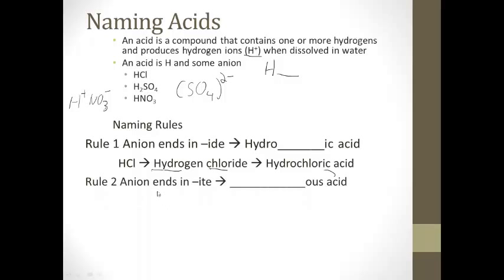Rule two, if the anion ends in -ite, this time we're not going to say the hydro, it's whatever the base of it is, -ous acid. So if we have H2SO3, which is hydrogen sulfite, remember your polyatomic ion H2SO3 to the minus, hydrogen sulfite becomes sulfurous acid.